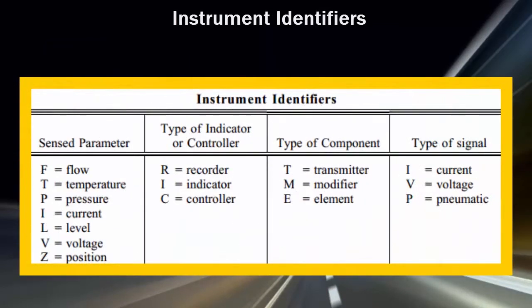Instrument identifiers. One of the main purposes of a P&ID is to provide functional information about how instrumentation in a system or piece of equipment interfaces with the system or piece of equipment. Because of this, a large amount of the symbology appearing on a P&ID depicts instrumentation and instrument loops.